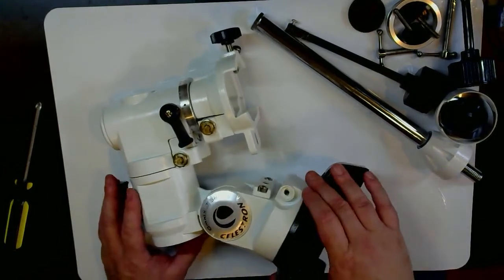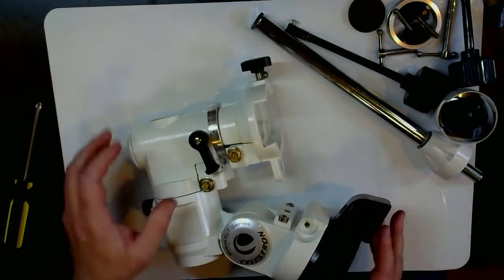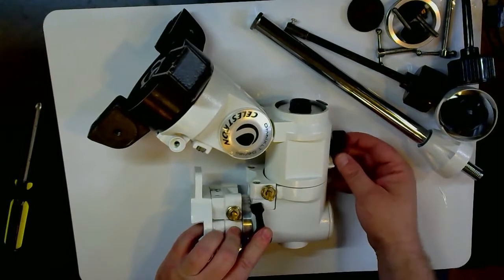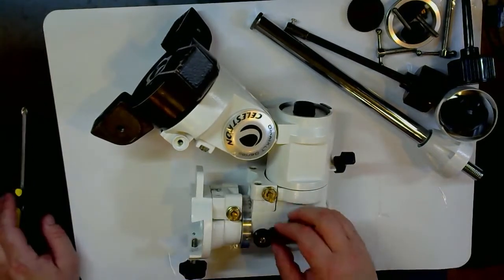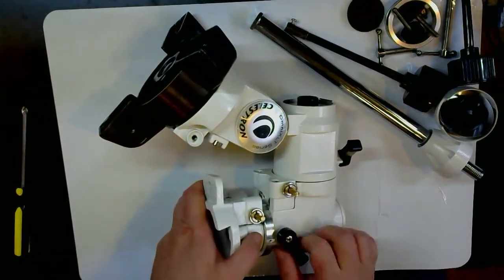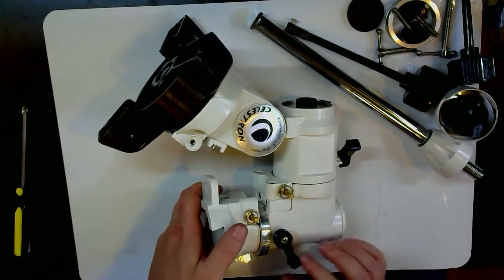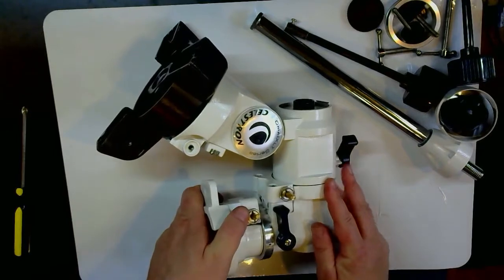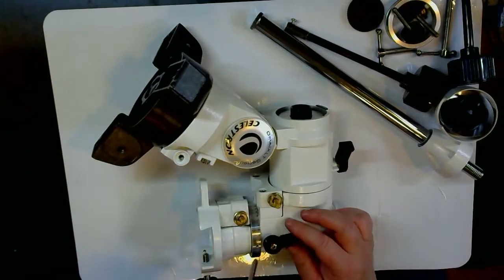One of the first things we can do - here are lock knobs, we'll take those off. These are designed to lock the axis. If you tighten this up counterclockwise, the axis gets locked. If you loosen it, then you can spin.